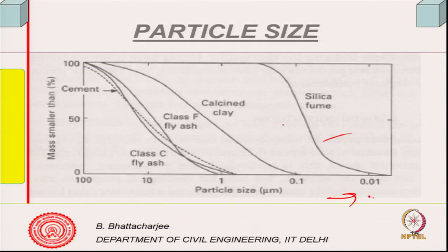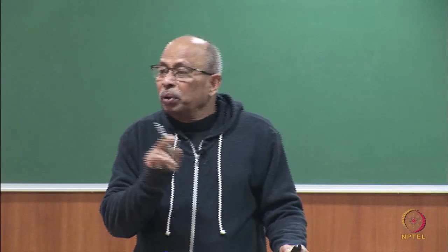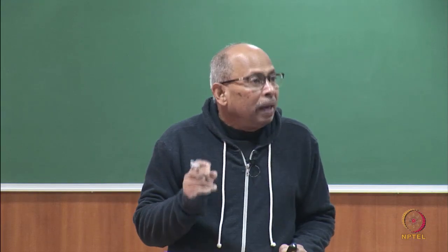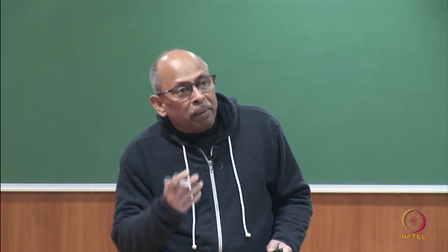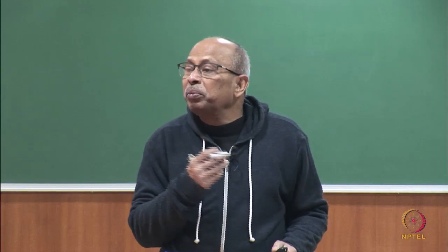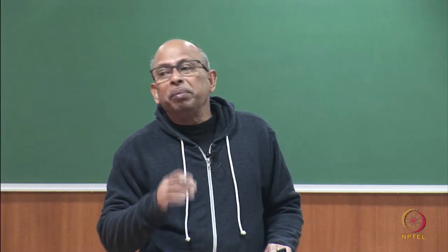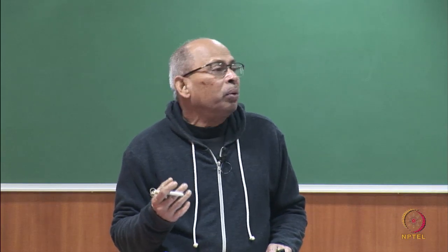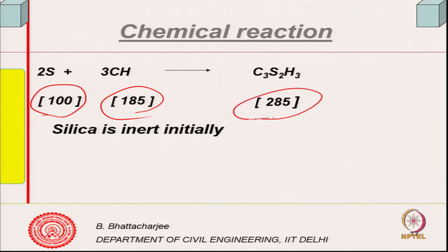Silica fume is the finest, ranging from 0.1 microns, while cements and fly ash are coarser. These pozzolanic materials are used to reduce the OPC clinker content, which relates directly to sustainability. Their addition does not produce carbon dioxide — silica fume, for instance, is a waste product from the silicon or ferrosilicon industry, and it is highly beneficial for making high-strength and ultra-high-strength concrete.